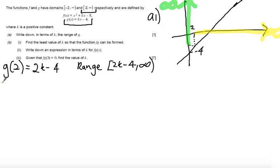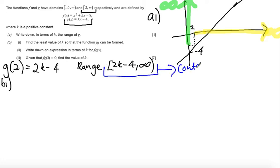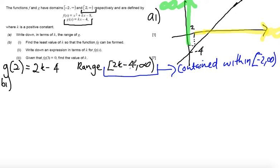Part b part i: Find the least value of k so the function fg can be formed. What this means is that my range of g must be contained within the domain of f(x), which is minus 2 to infinity. In terms of the upper bound we're fine, but I need to make sure that 2k minus 4 is greater than or equal to minus 2 — it needs to not be less than it.